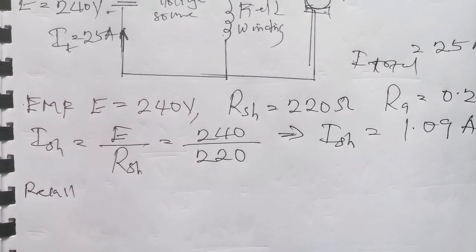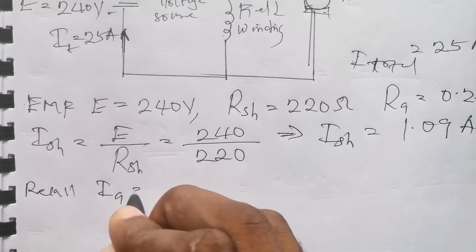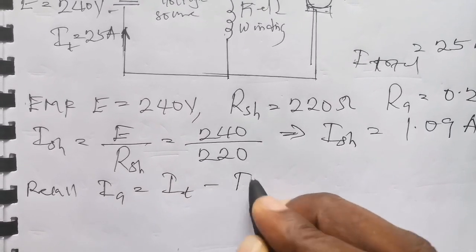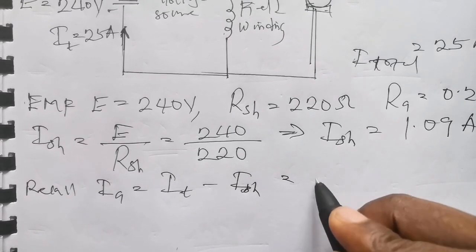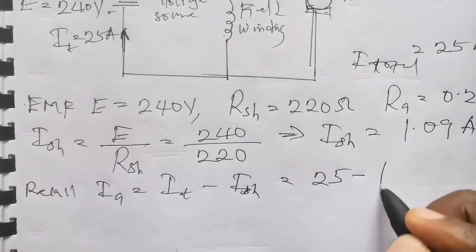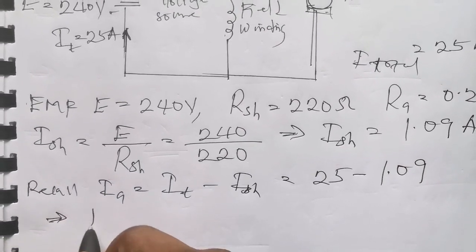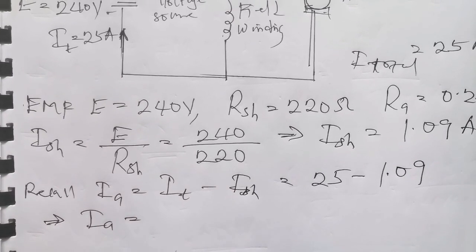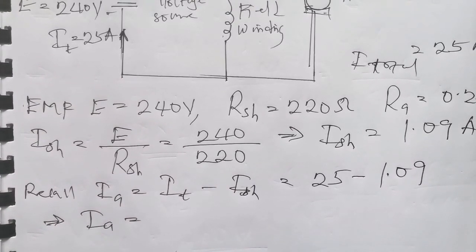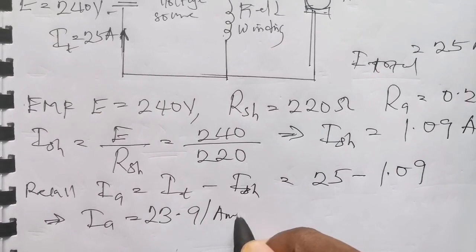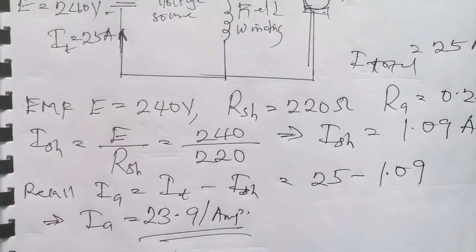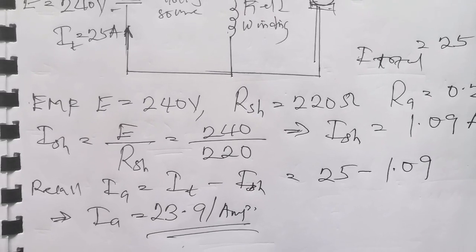Recall that the armature current is given as total current minus the shunt current. So Ia = 25 amps minus 1.09, which gives us 23.91 amps. So our armature current is 23.91 amps.